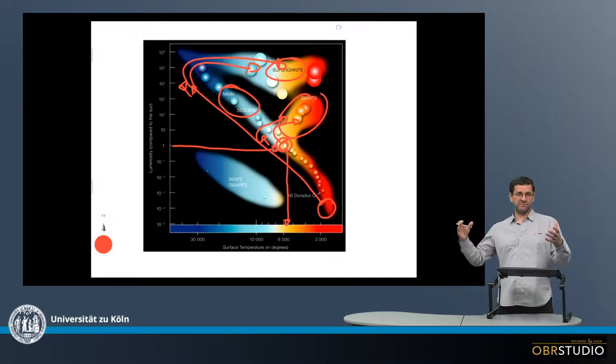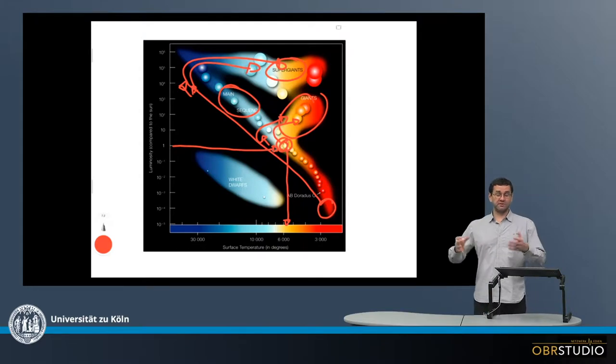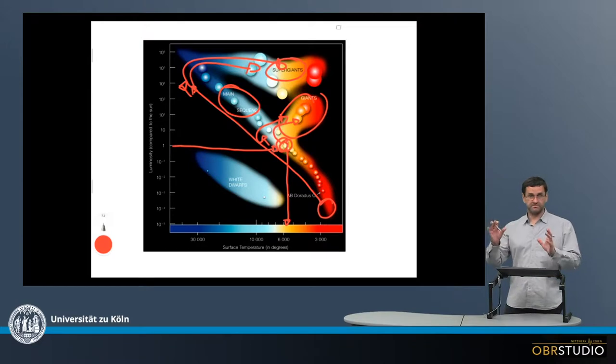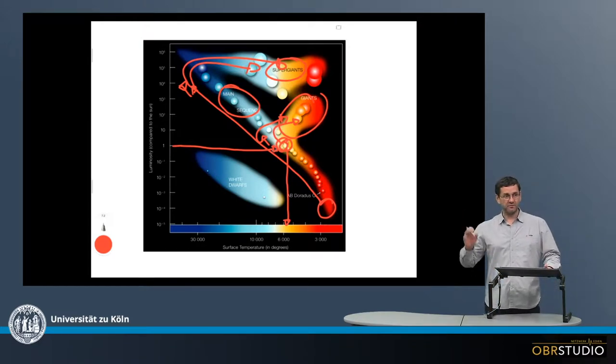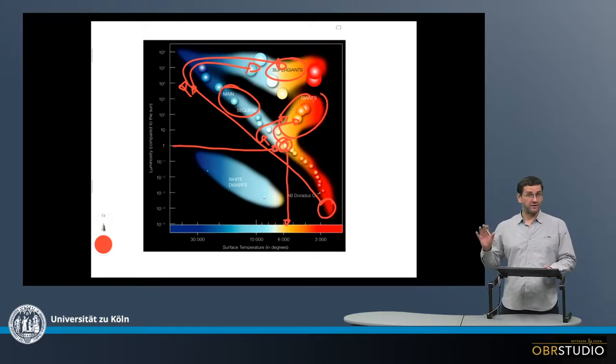And the sun, when the sun will become a red giant star, it will be so big that Earth's orbit will be within the sun and then we have climate change. But it takes 4.5 billion more years until we get there.